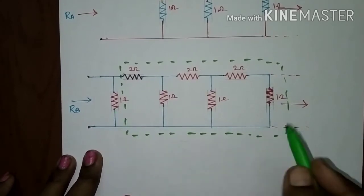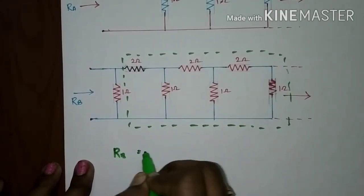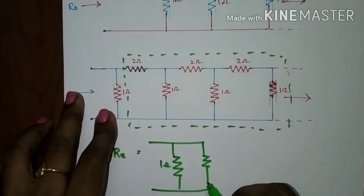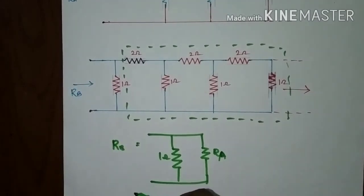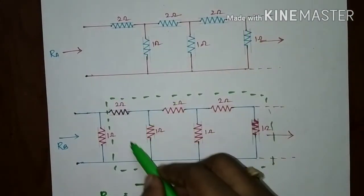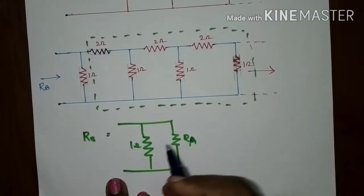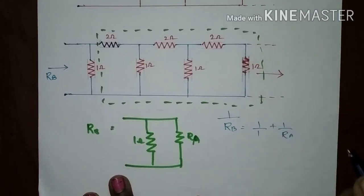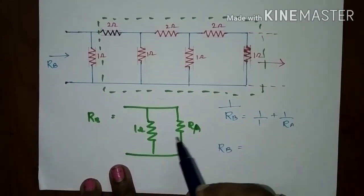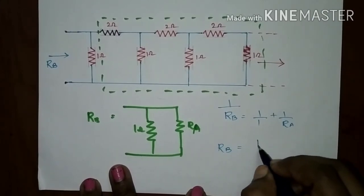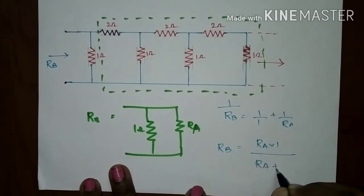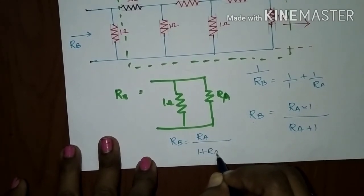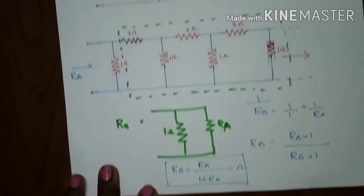The relationship between Rb and Ra is straightforward. Rb can be redrawn as the parallel combination of 1 ohm and Ra. So 1/Rb equals 1/1 plus 1/Ra. Equivalently, Rb equals the product of the resistances divided by their sum, which is Ra into 1 divided by (Ra plus 1). Therefore Rb equals Ra divided by (1 plus Ra). This matches option D.